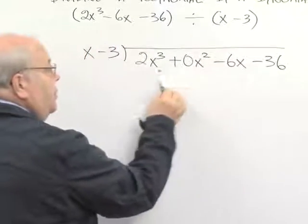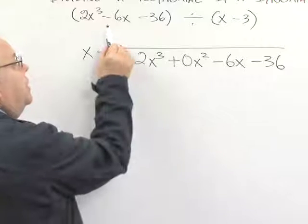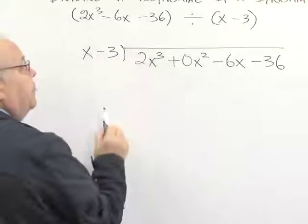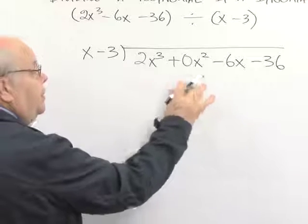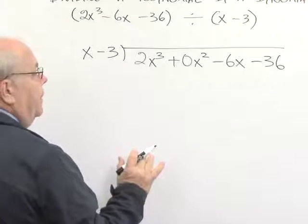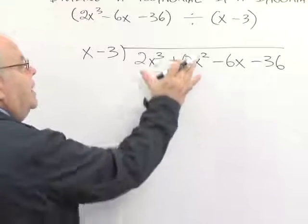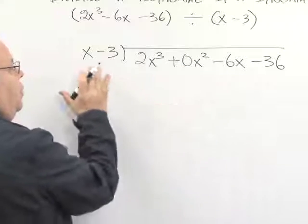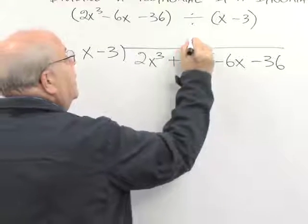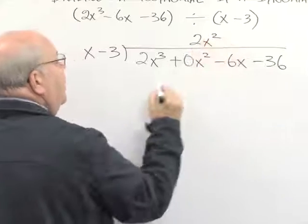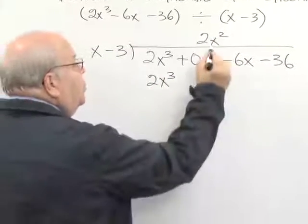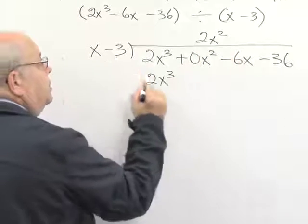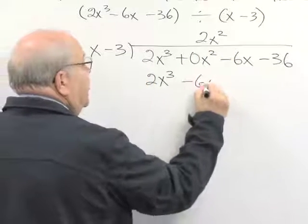As we do our division, the columns will line up with the right exponents. If we see that a particular variable with an exponent is missing, we sometimes need to insert a 0 term in those places. Now let's see how we do the division. We know that x times 2x² would be 2x³.